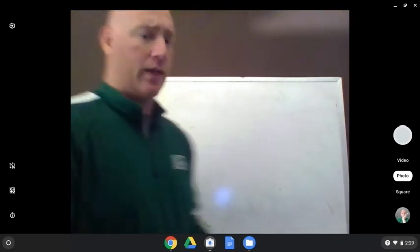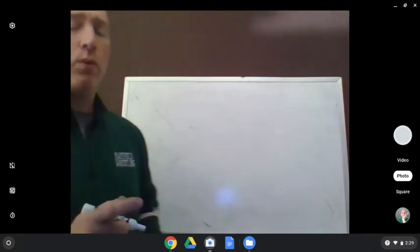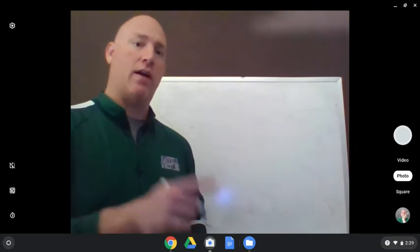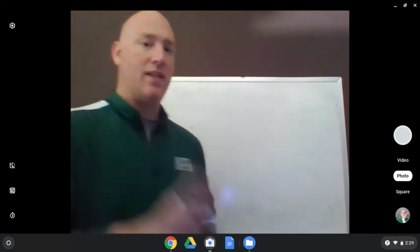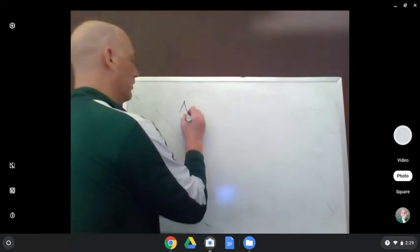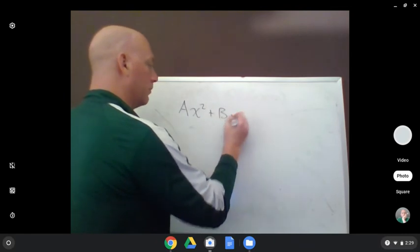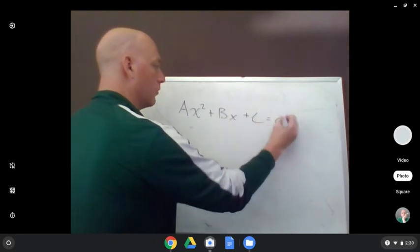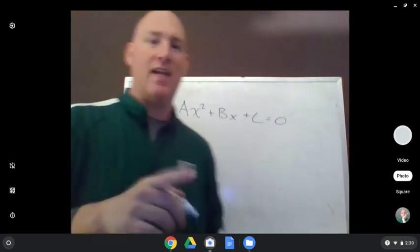So now let's get into what 9.5 is. So far, we've worked on solving x squared functions. Now they come in the standard form of this: ax squared plus bx plus c equals 0. Remember, we called that standard form.